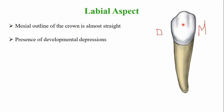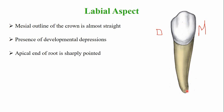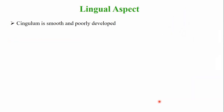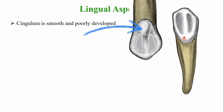A labial wedge is present but is also less prominent compared to the labial wedge of the maxillary canine. The root apex is sharply pointed. The cingulum is poorly developed, less developed compared to the maxillary canine — a key feature that helps differentiate the mandibular from the maxillary canine.